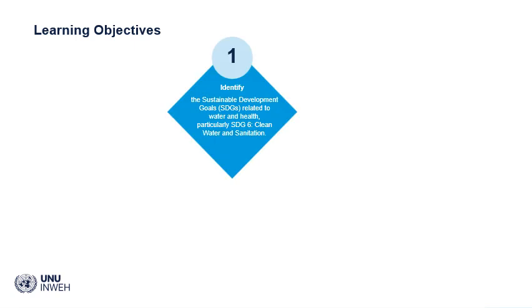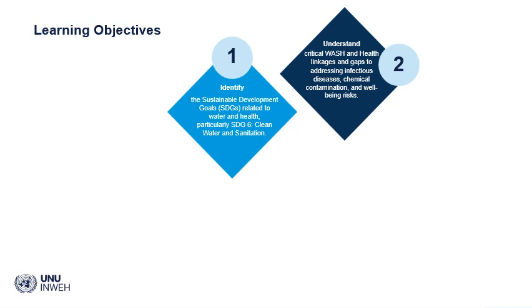We have four learning objectives. We hope that at the end of the course you'll be able to: 1. identify the sustainable development goals related to water and health, particularly SDG 6; and 2. understand critical WASH and health linkages and gaps to addressing infectious diseases, chemical contaminations, and well-being risks.